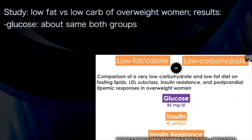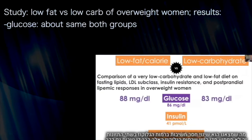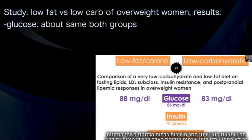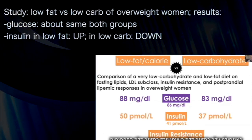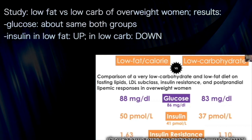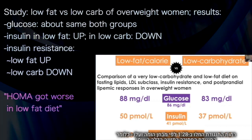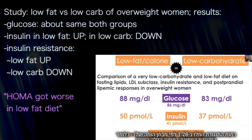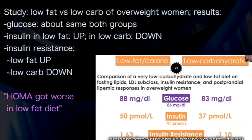Another study: at baseline, there were insignificant changes in glucose in either diet group — not too surprising since glucose levels were already pretty good. Insulin tended to go up on the low-fat group and tended to go down on the low-carbohydrate group. These differences became even more obvious with measurements of insulin resistance, where the HOMA score started at 1.28, went up — meaning insulin resistance got worse — in the low-fat group, and went down — meaning insulin resistance improved — in the low-carbohydrate group.